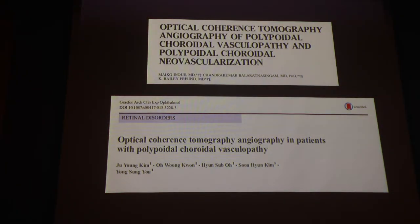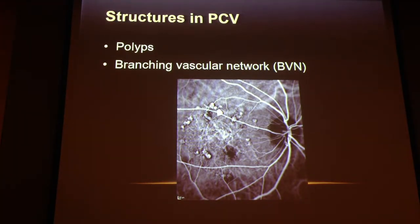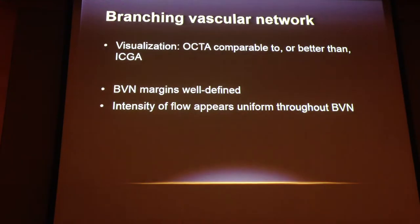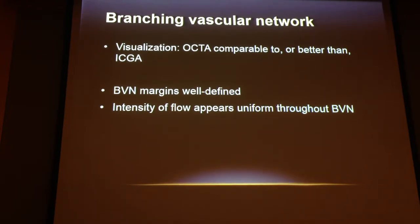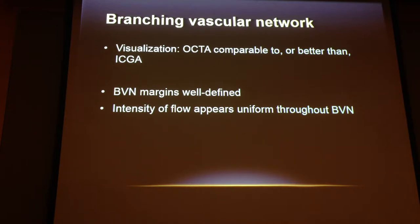To date, we know of two publications on the OCT angiography features of PCV — one from Korea, one from the West. When we talk about PCV, we're thinking both of the polyps as well as the branching vascular network that supplies them. With the branching vascular network, both from the existing literature and our own experience, we found that OCT angiography is at least comparable to, or often better than, ICG angiography. The margins are well-defined, and the intensity of the flow has been seen to be fairly uniform throughout.